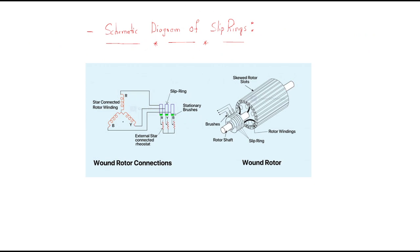This is the schematic diagram. Just observe here — this is R, Y, B. This is the star-connected rotor winding, represented in these turns. This is the R phase, this is a 3-phase winding, this is the Y phase, and this is the B phase. The R phase is connected through a slip ring, the B phase is connected through a slip ring, and the Y phase is also connected through slip rings. These are the brushes — the green color represents stationary brushes, these are not rotating.